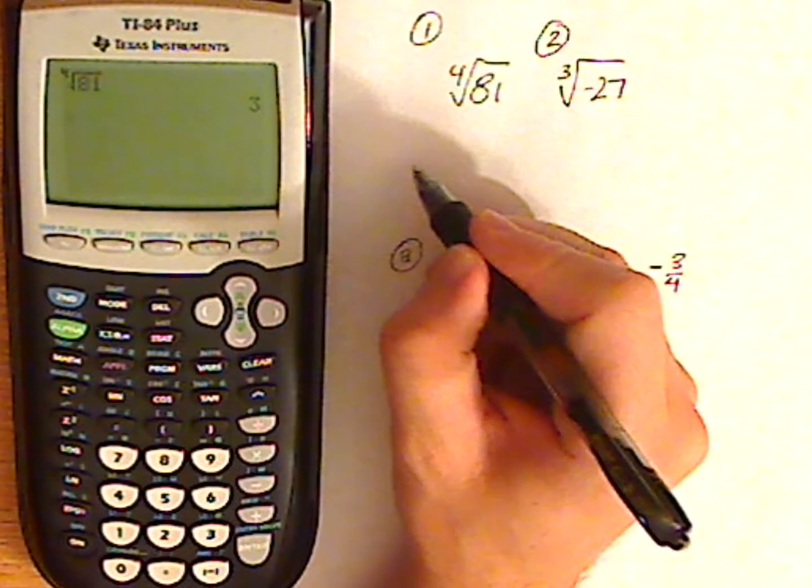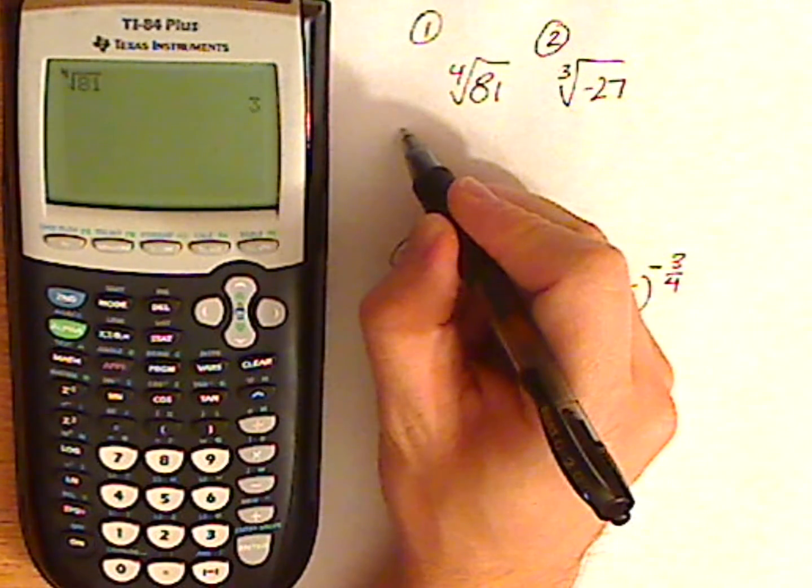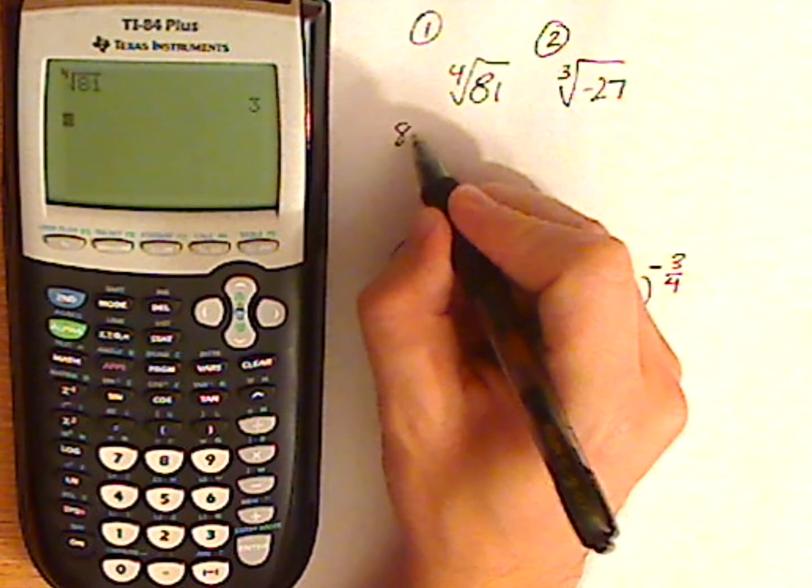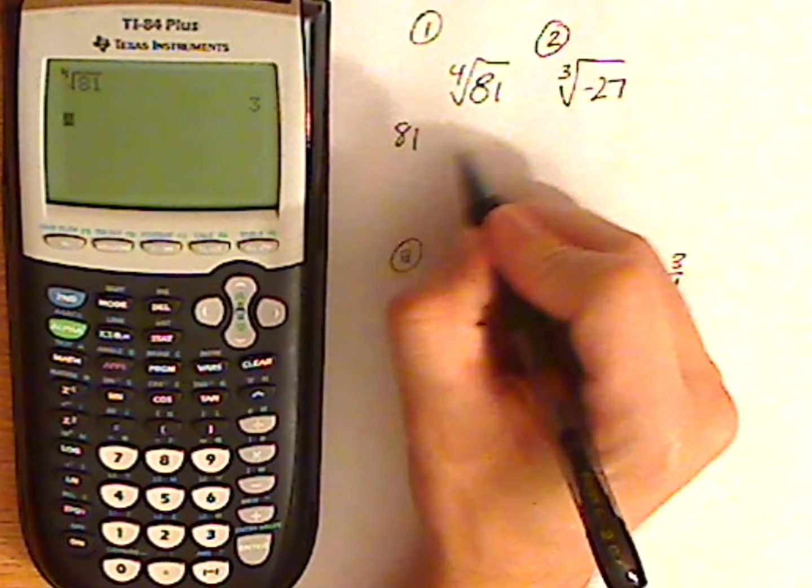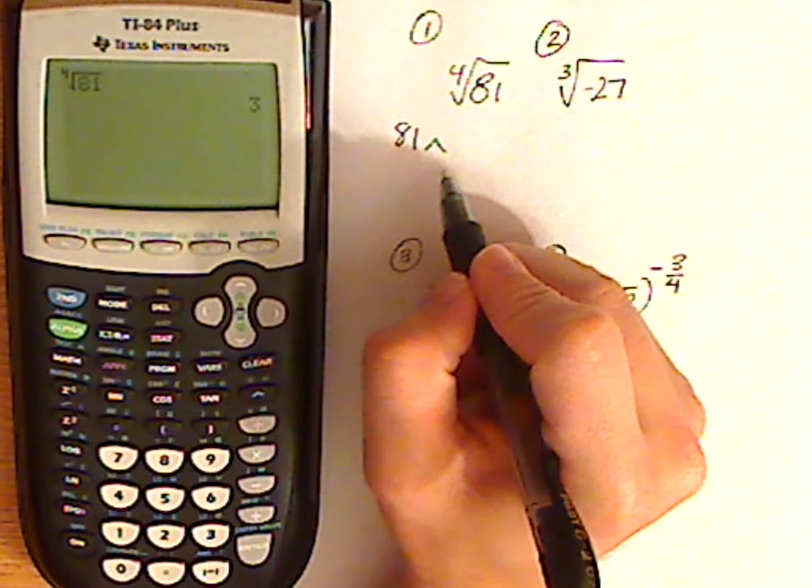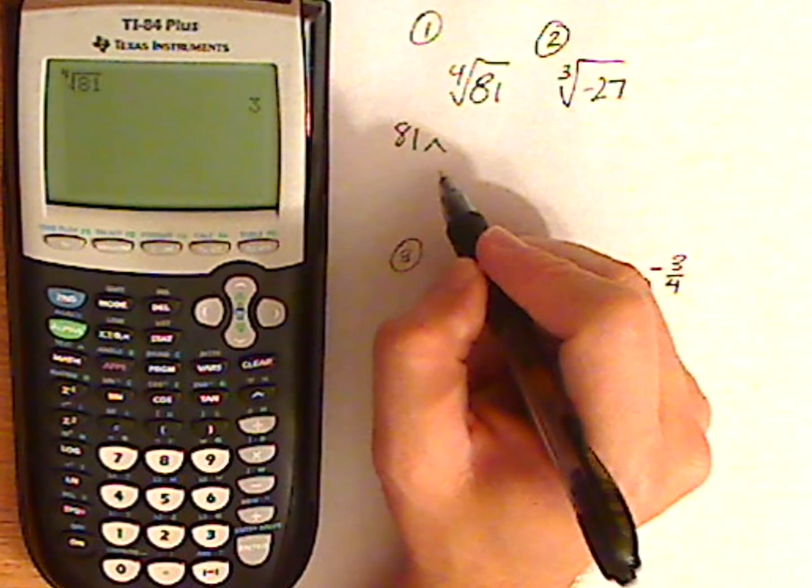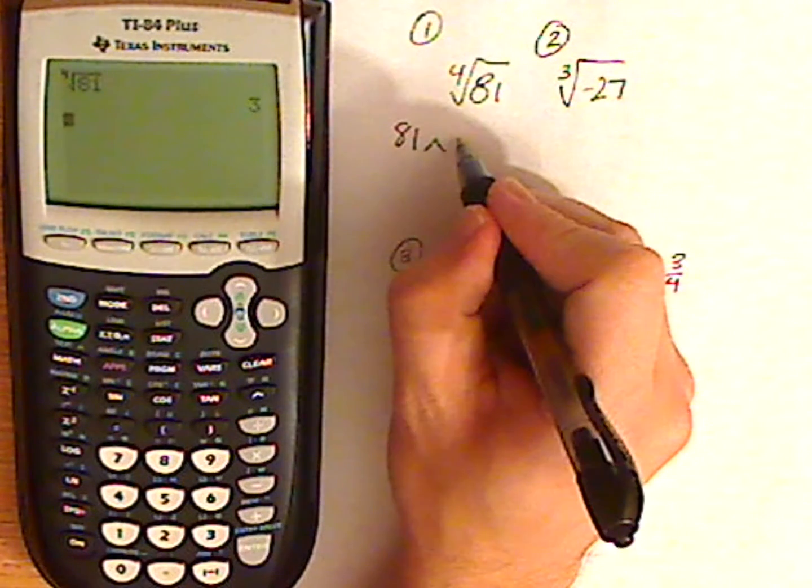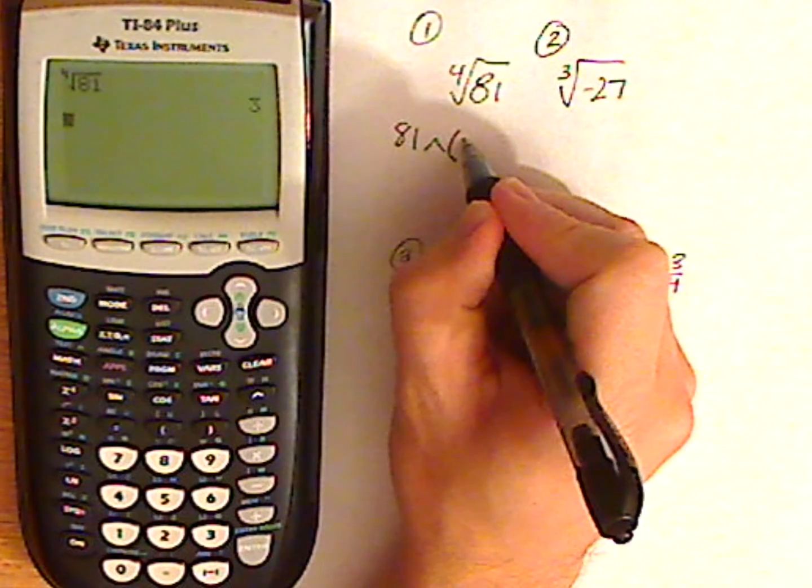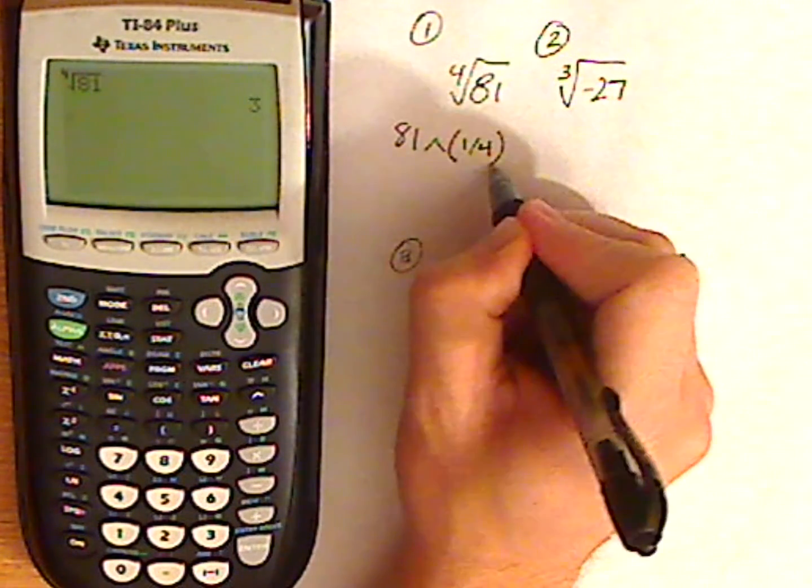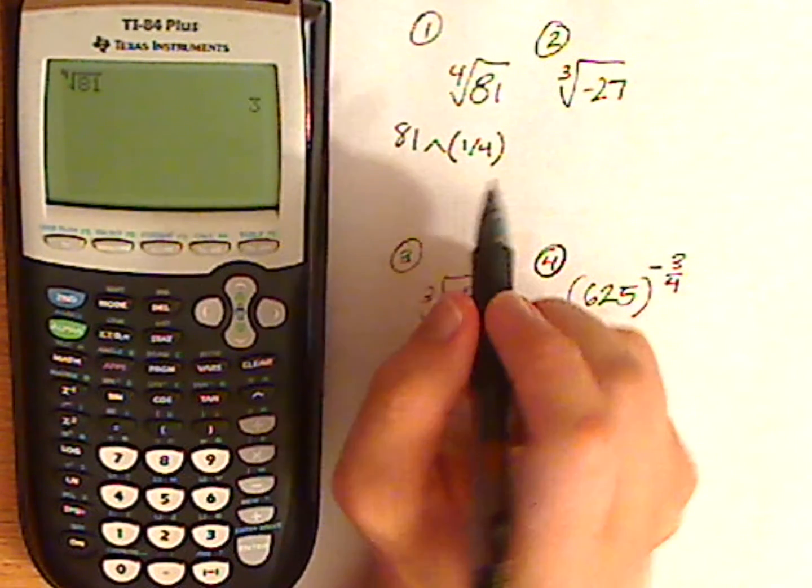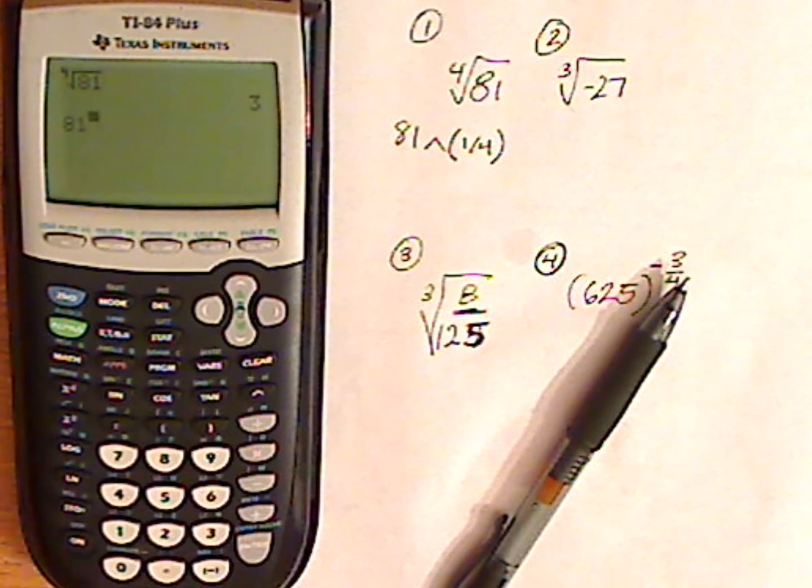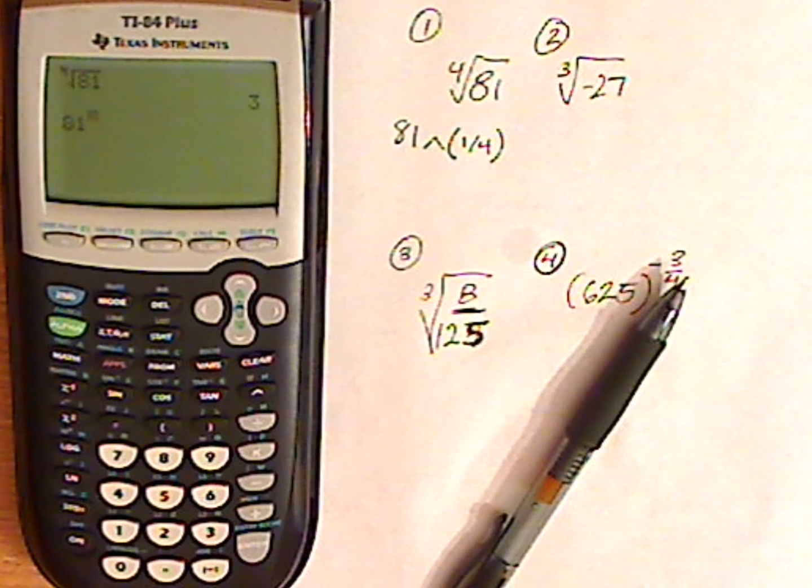Now to type it in as a rational exponent you don't even have to use the Math button. What you can do is type in 81 and then type in the up arrow, carat, which basically makes it into an exponent. Now the fourth root using rational exponents is the same as saying one fourth as an exponent. So what you do is you push 81, little up arrow, notice automatically it's as an exponent. Then 1 divided by 4.